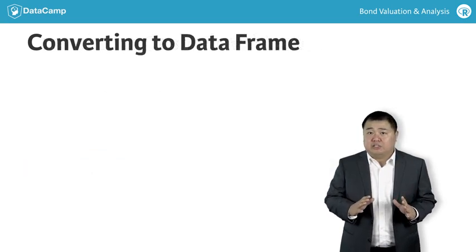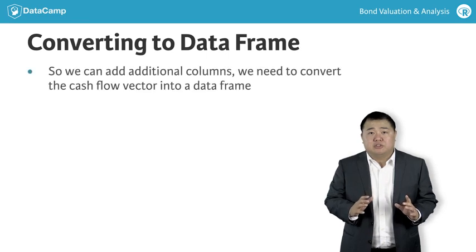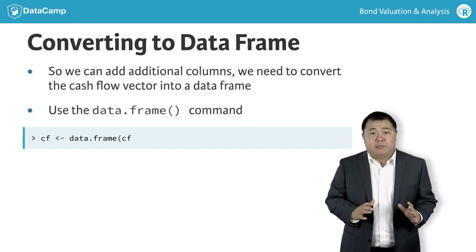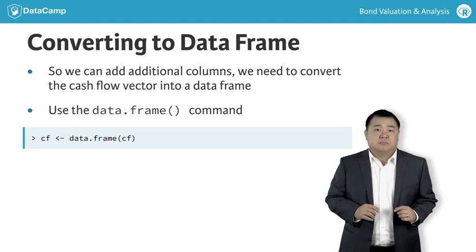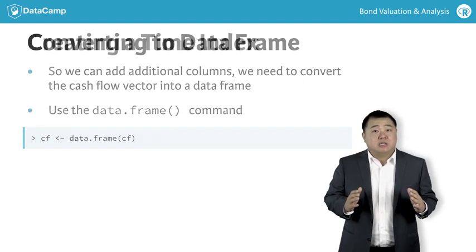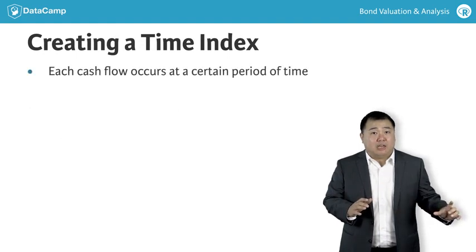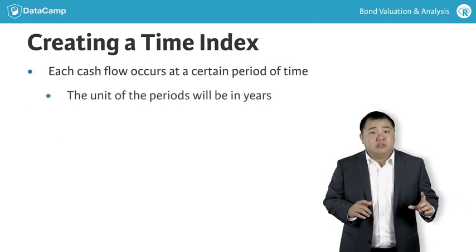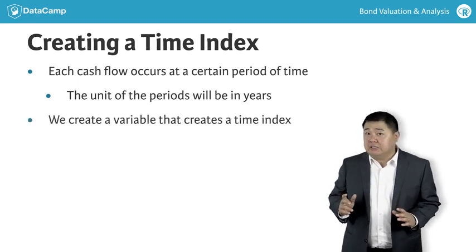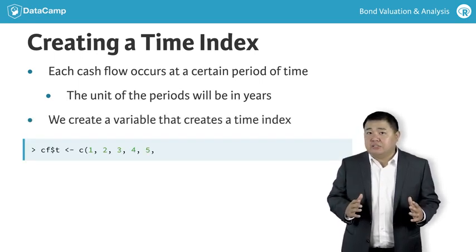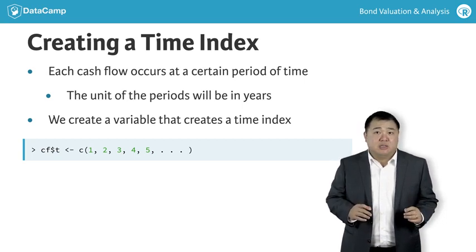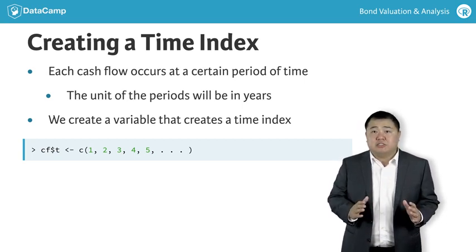To complete the bond valuation exercise, we have to be able to add additional variables to the cash flow vector. We do this by using the data frame command. Because each cash flow occurs at a particular time, the first variable we need to add is a time index. We'll label this variable T. The time index is used as the number of periods — in our example, years — that we will discount each of the bond's cash flows.